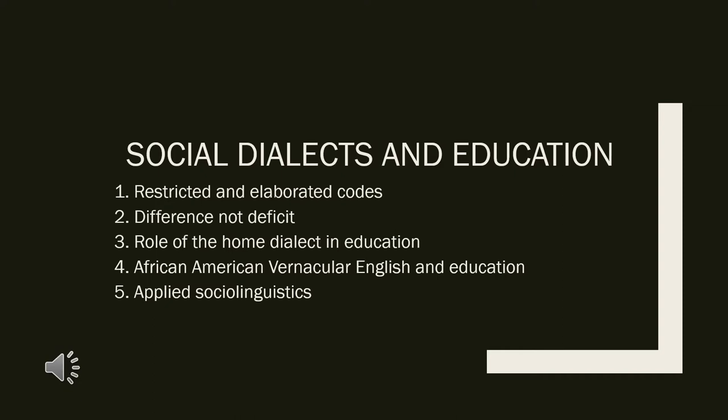I will divide this point into five sub-points. The first is about restricted and elaborated codes, or the common codes used in social dialects. Then, difference not deficit, related to the language or varieties of language use. Then, role of the home dialect in education. Then, fourth, African American vernacular English in education. And then, applied sociolinguistics, or some suggestions from experts to sociolinguists.